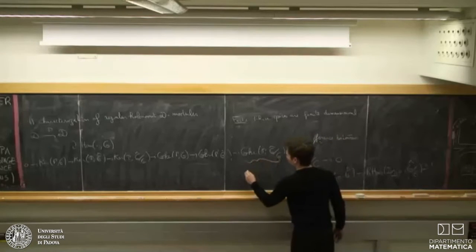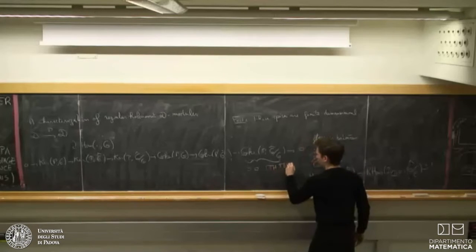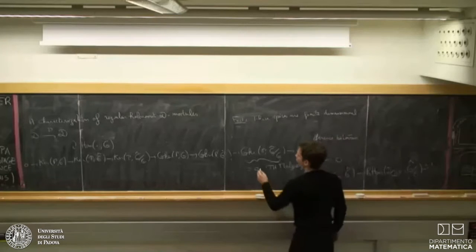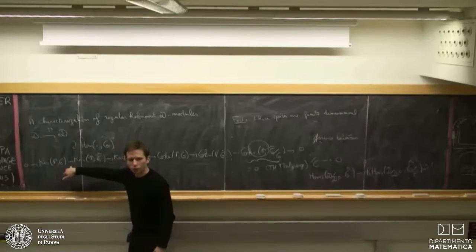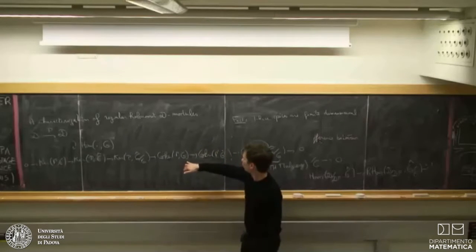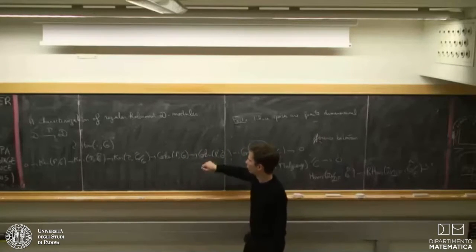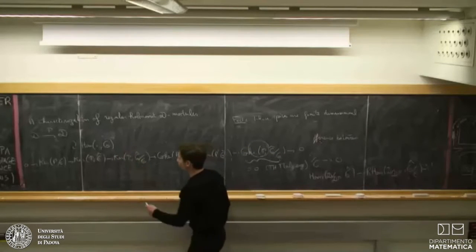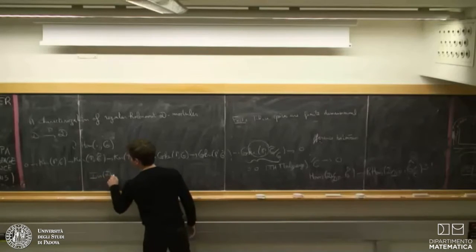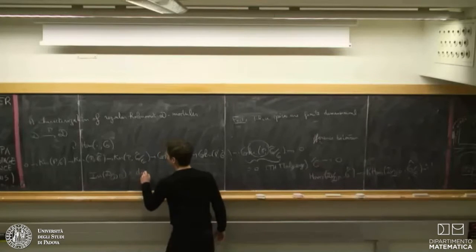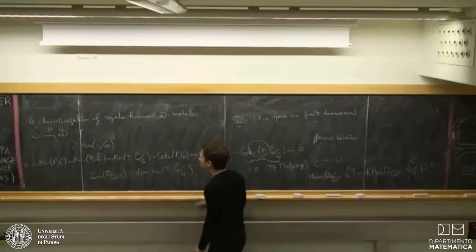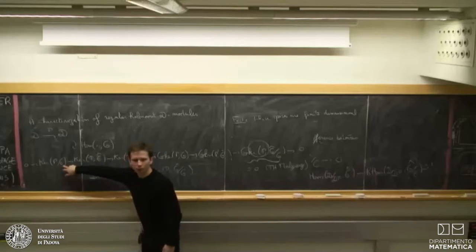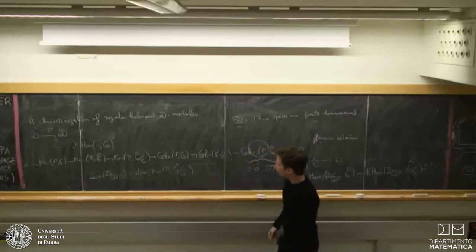So, there is a first theorem of Malgrange, which says that this guy is zero. So, we've got zero here. And looking at this exact sequence, we've got here a comparison map between analytic solution and formal solutions, and then a comparison map between analytical cokernel and formal cokernel. And what sits in between is this vector space.